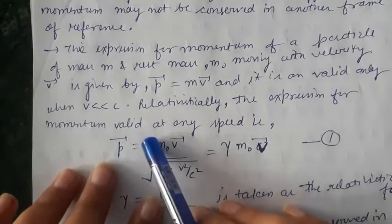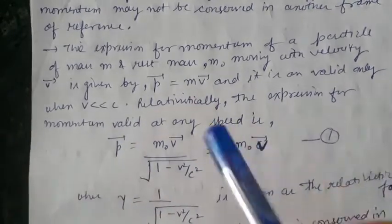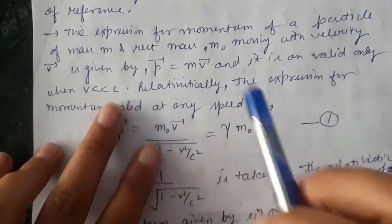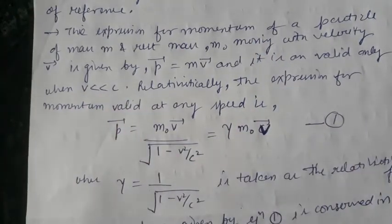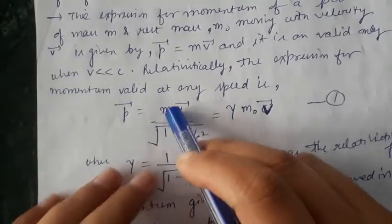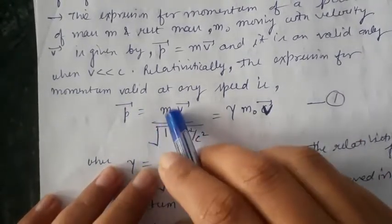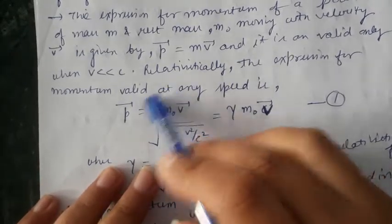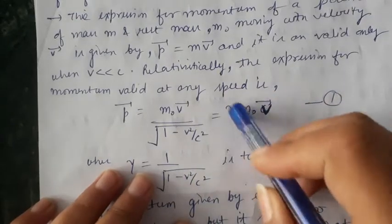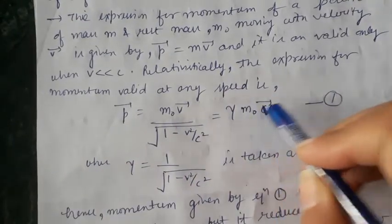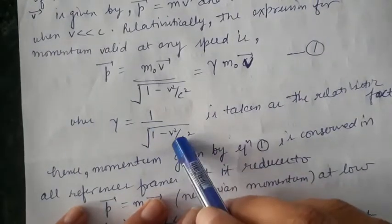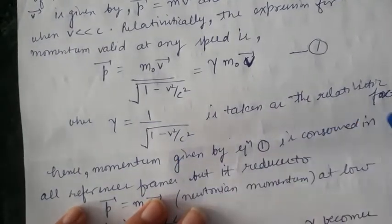The relativistic expression for momentum is valid at any speed, as long as v is less than c. The relativistic momentum is p = m₀v / √(1 − v²/c²), which equals γm₀v. This is equation number 1, where γ = 1/√(1 − v²/c²) is taken as the relativistic factor.